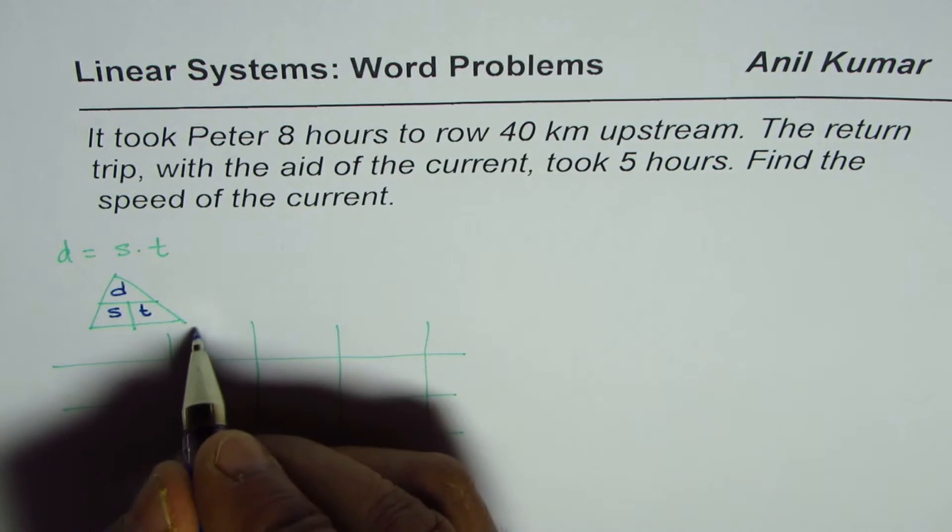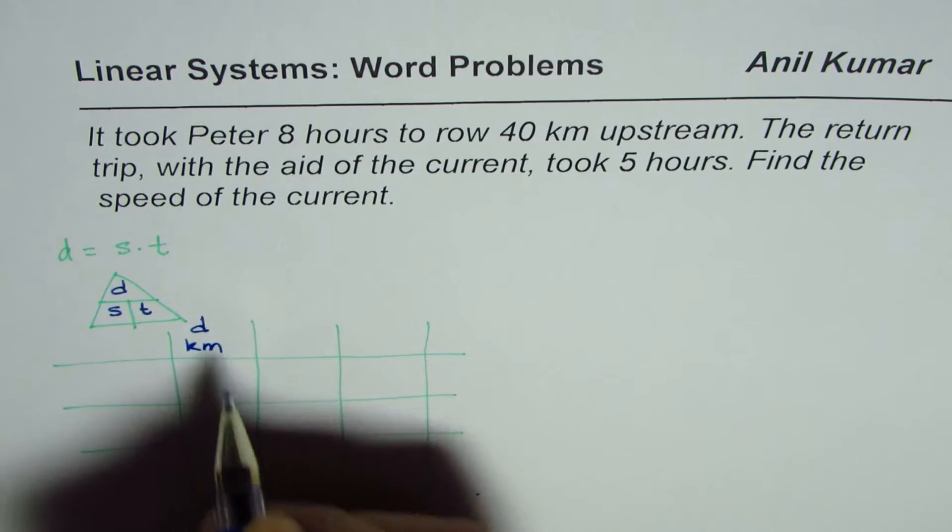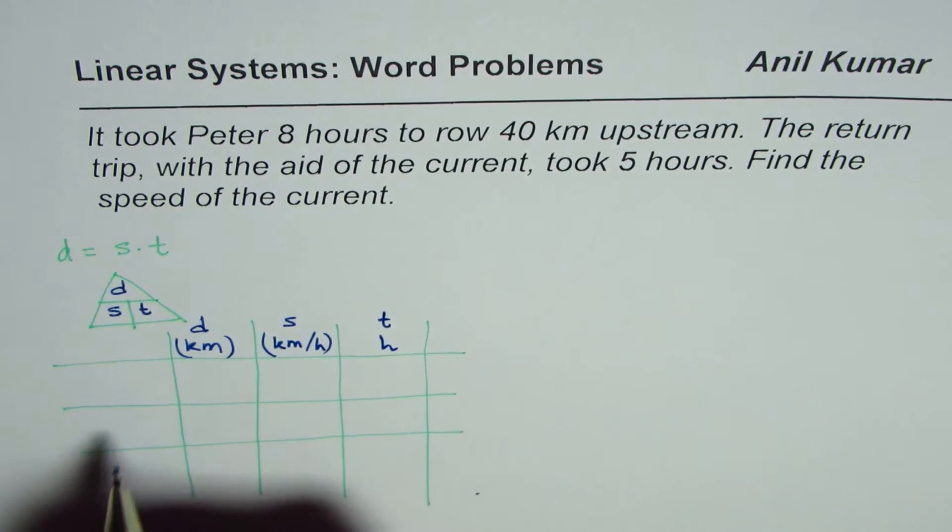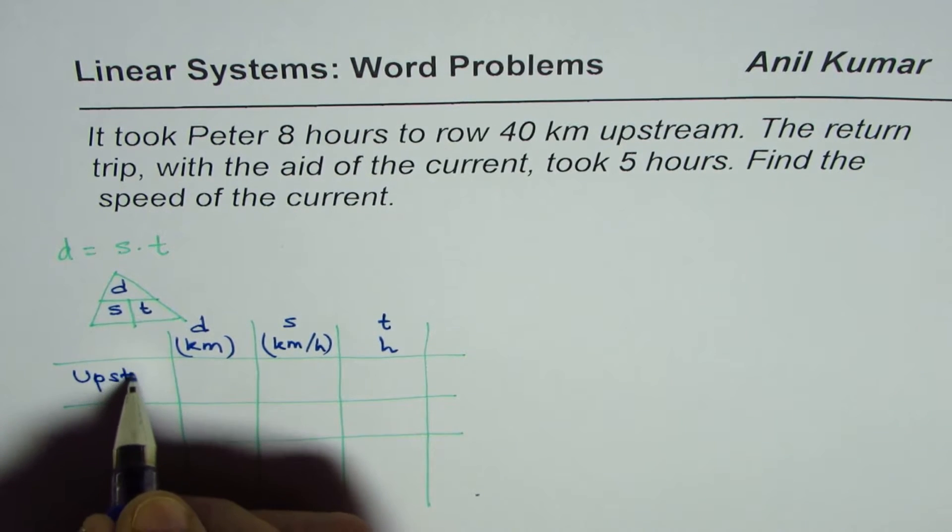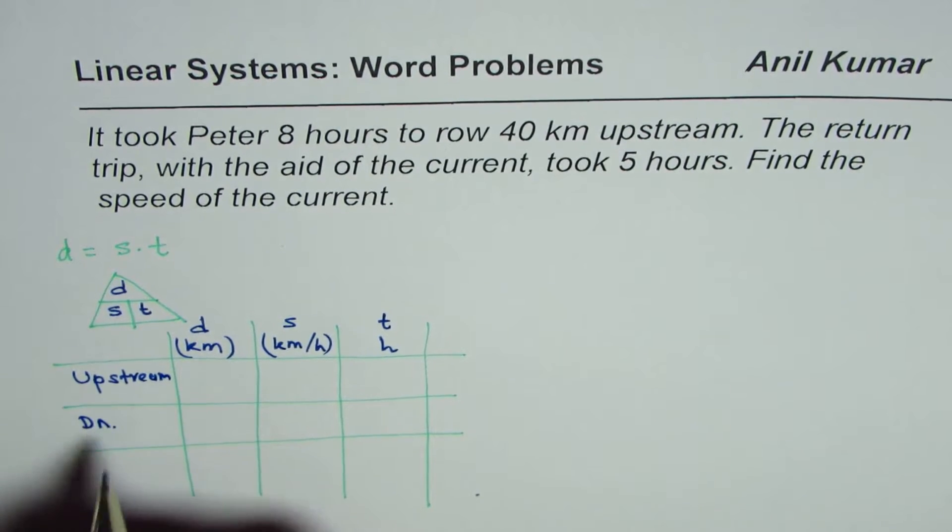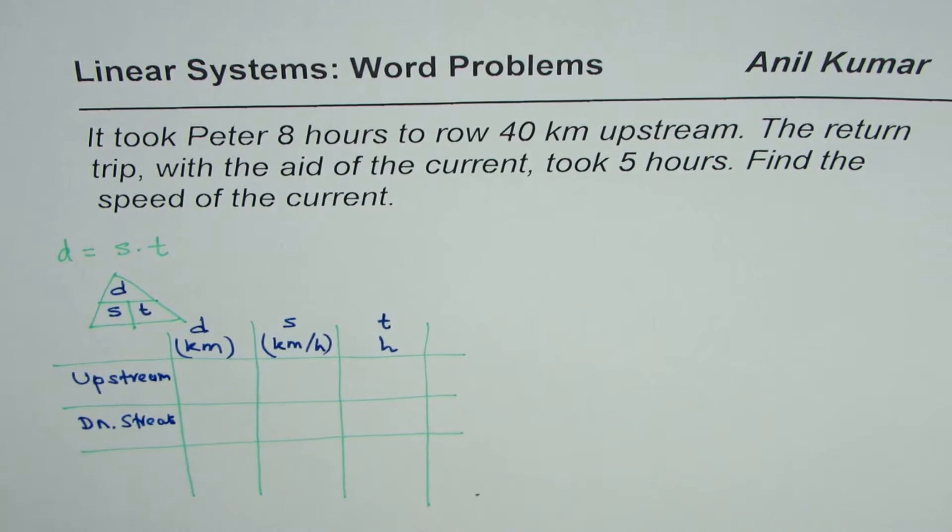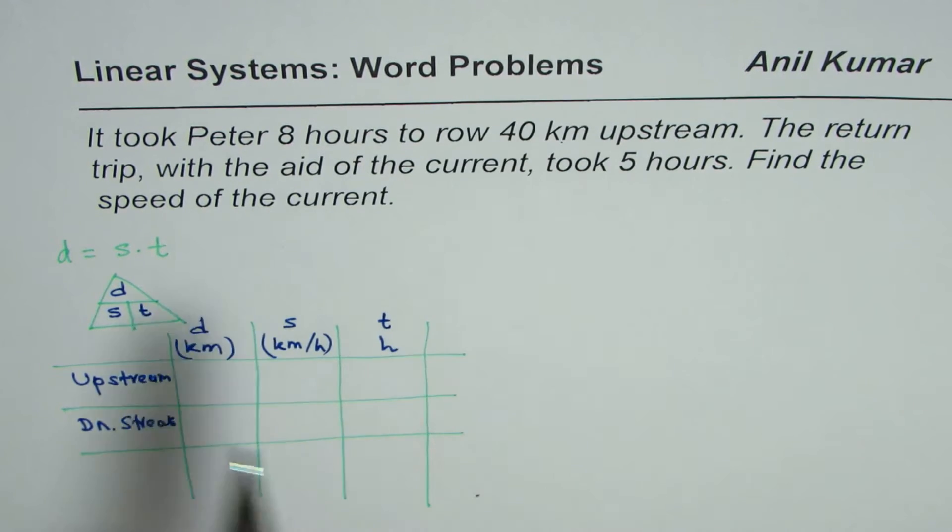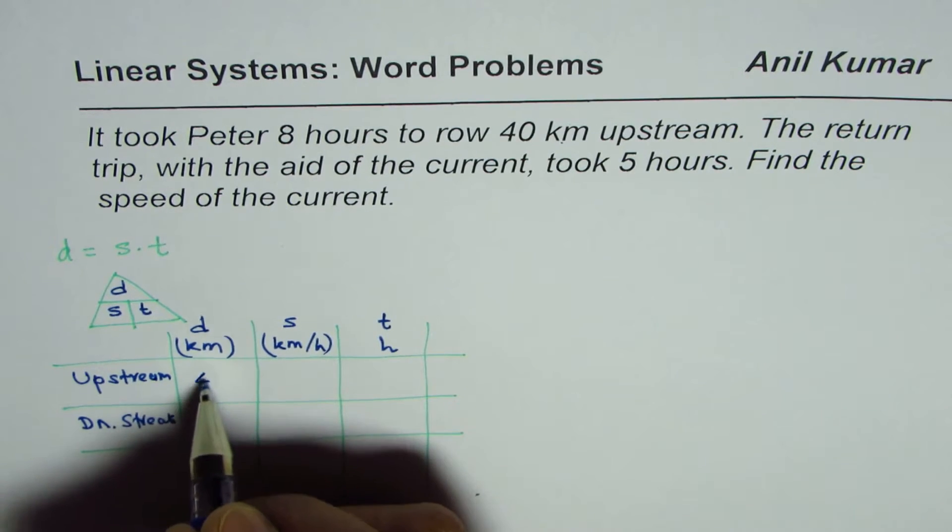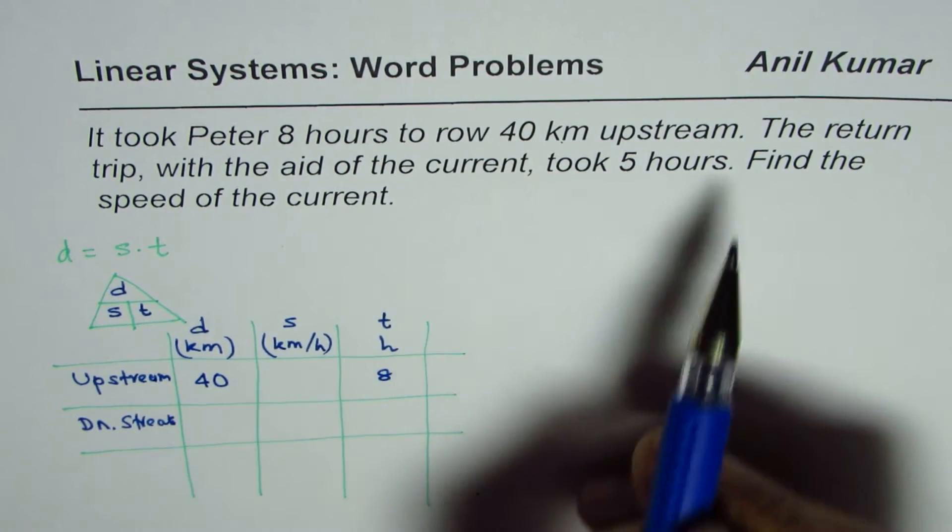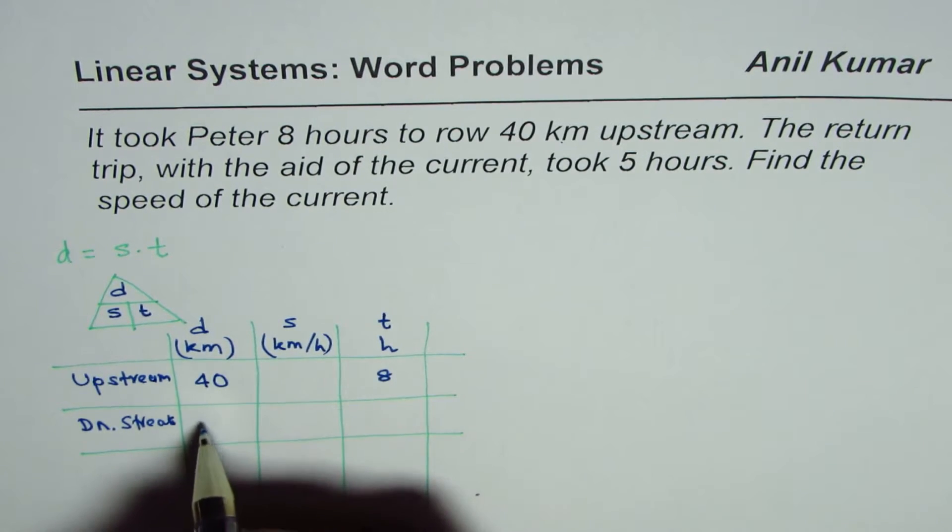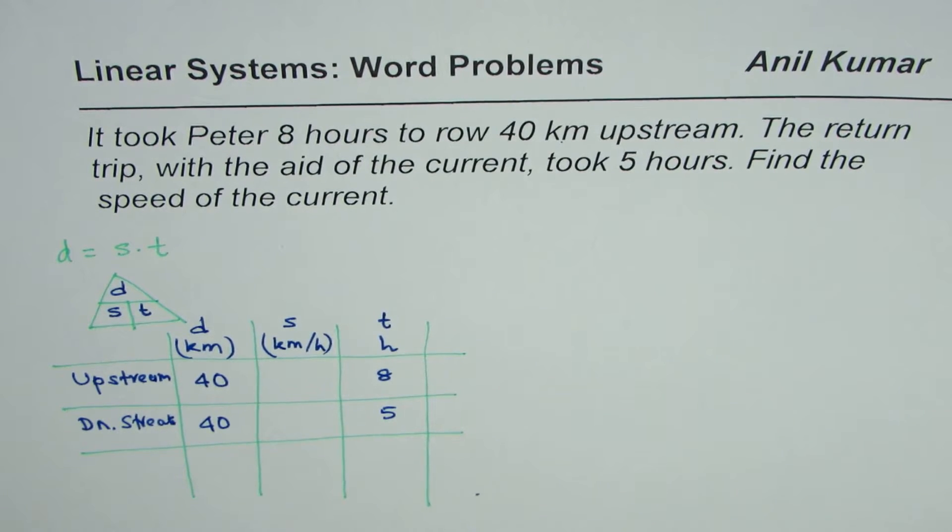So let's say here we have distance in kilometers, speed in kilometers per hour, and time in hours. This is upstream and that is downstream. It took Peter eight hours to row 40 kilometers upstream, so 40 kilometers is the distance, eight hours is the time. The return trip with the aid of the current took five hours, so return is again 40 same distance but five hours is the time.